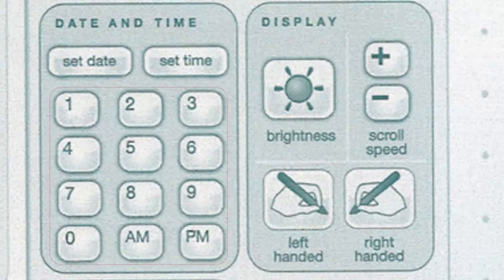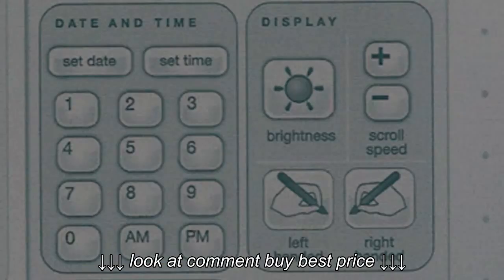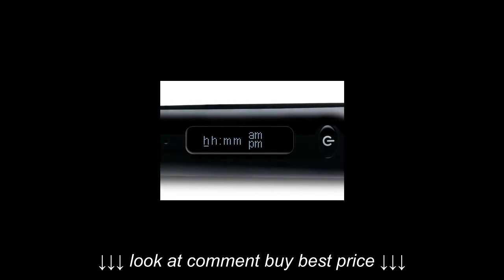Tap the Number buttons to program the time and indicate if it is AM or PM with the appropriate button. The OLED screen of your SmartPen will show your progress and display the time when programming is complete.